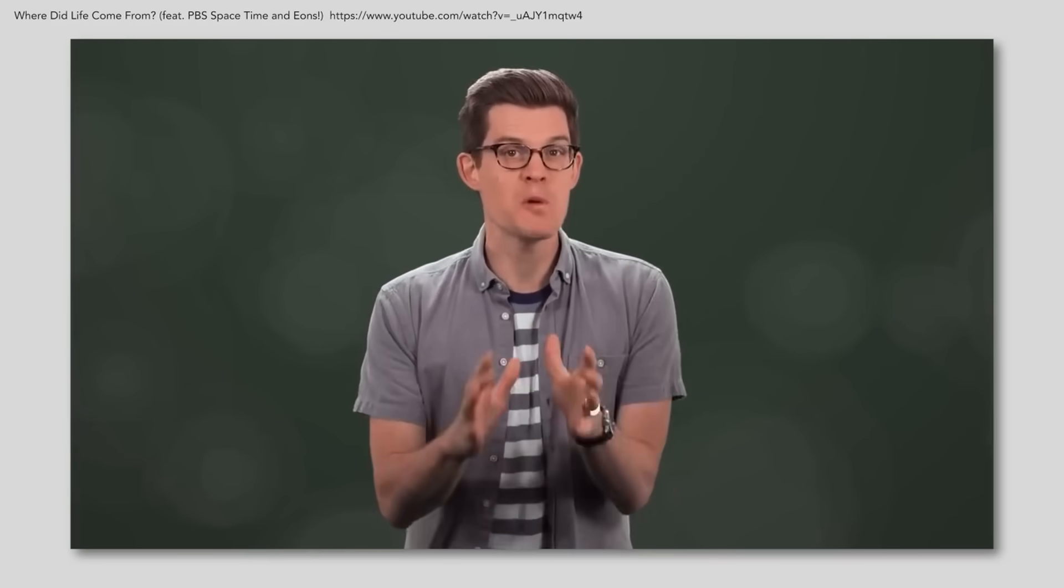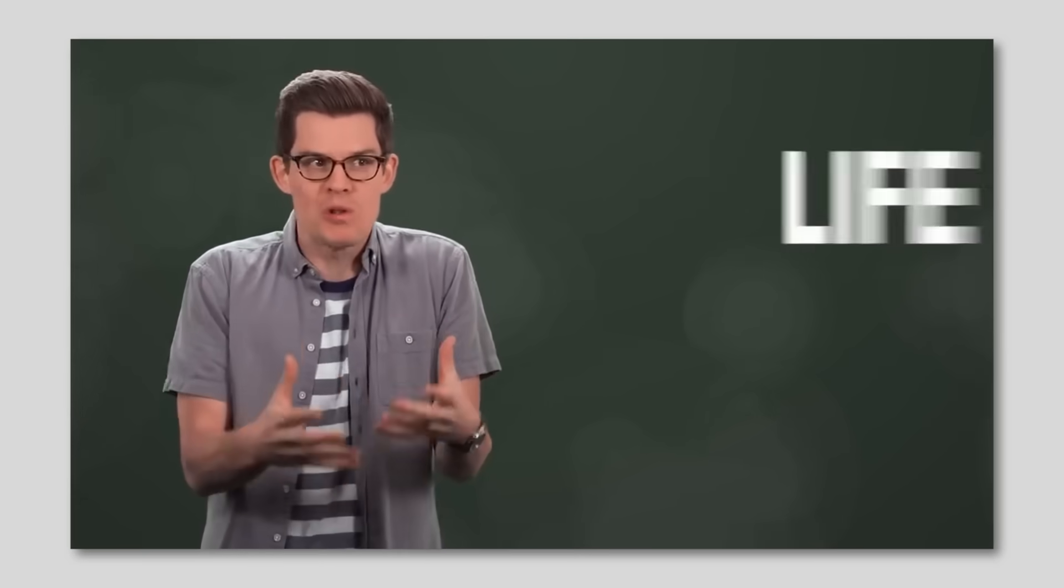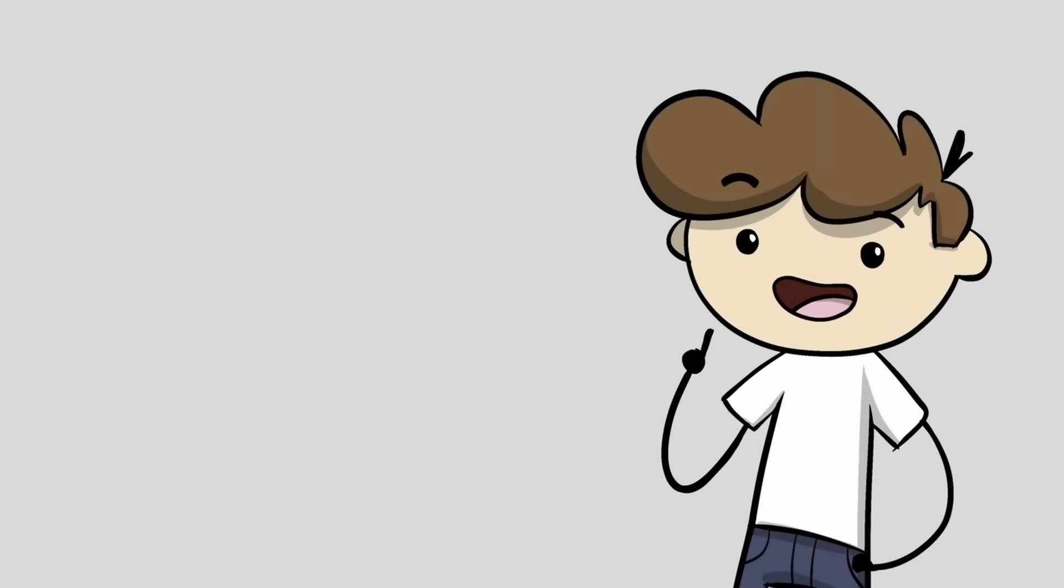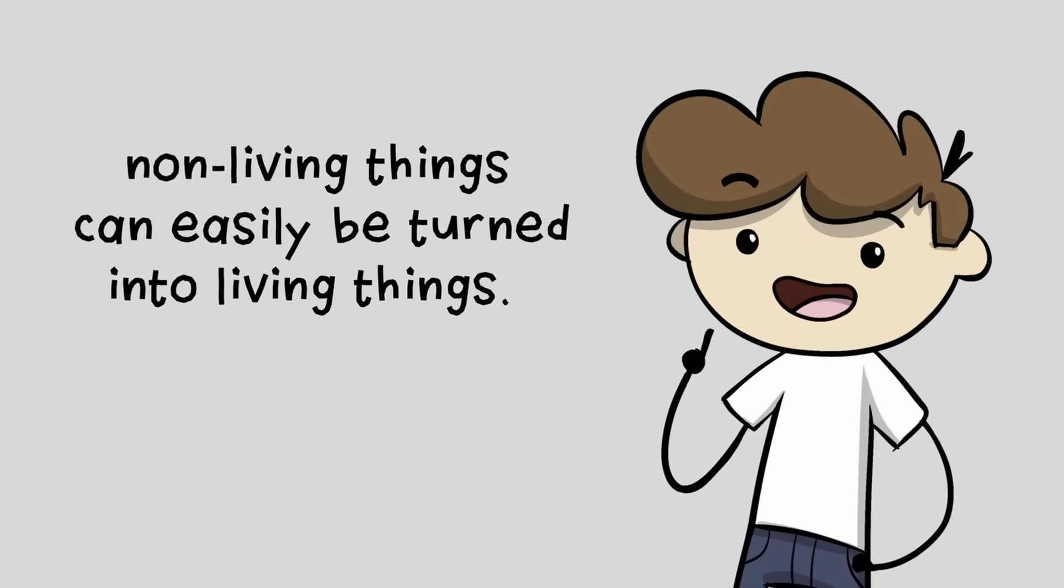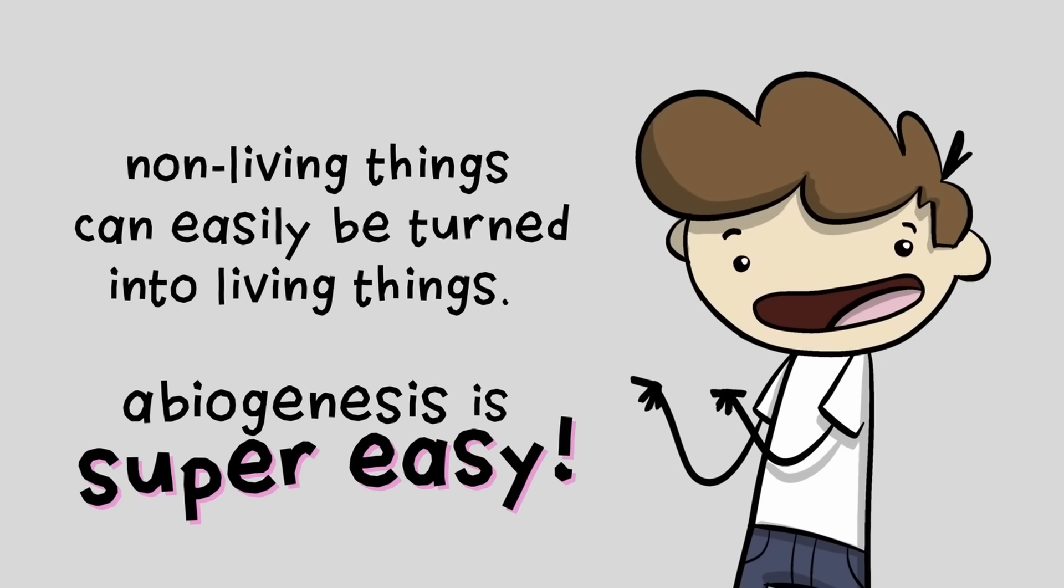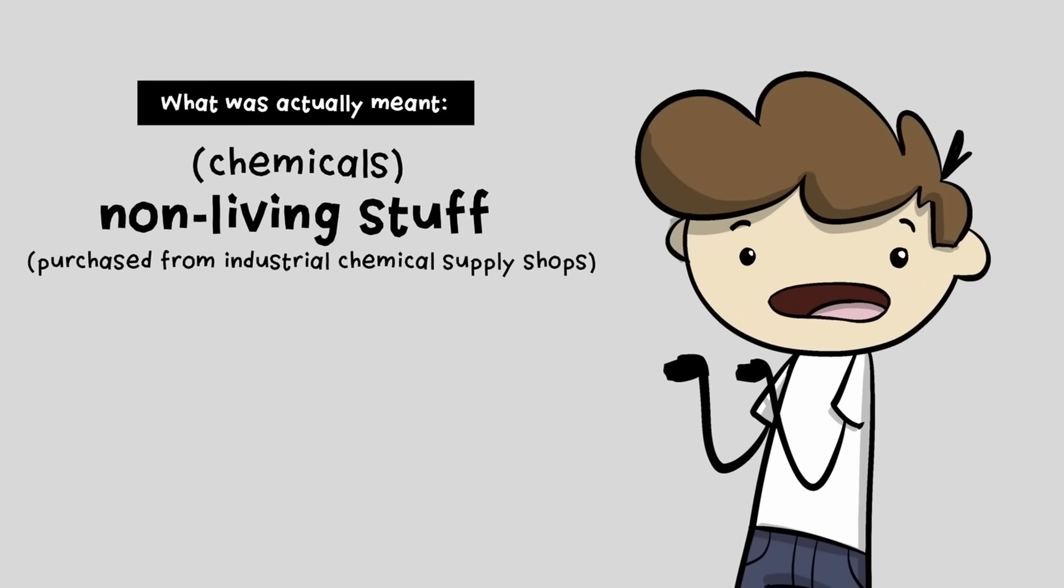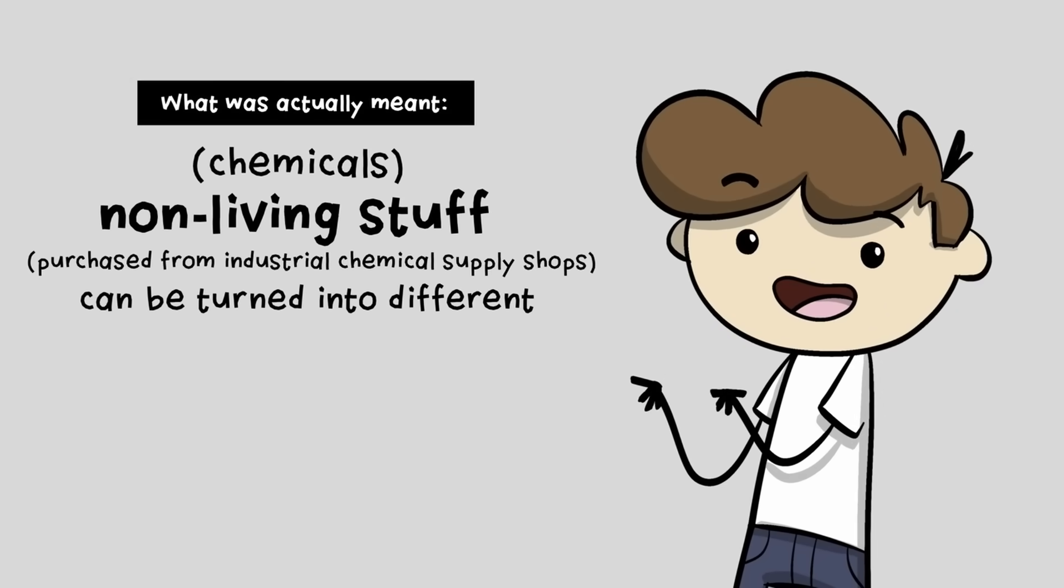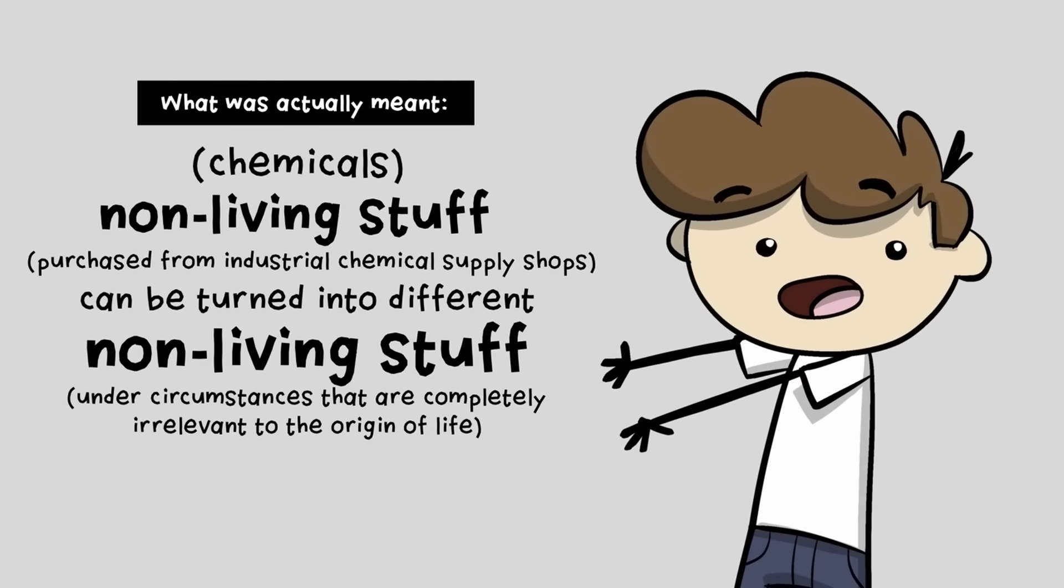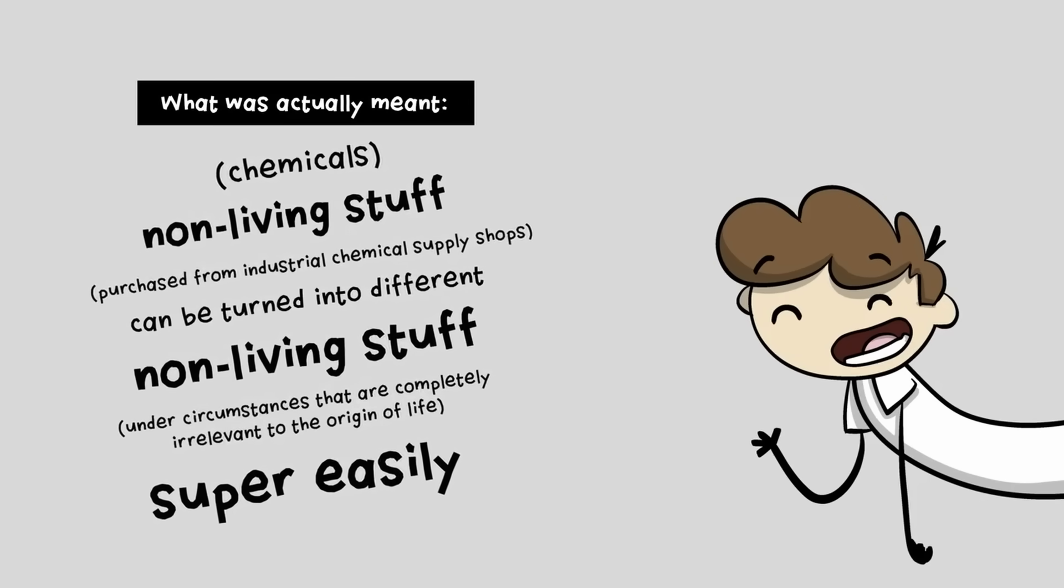What made Miller's experiment so special was it gave us proof. Regular non-life stuff could become cool life stuff super easily. Super easily. If you understood him to mean that non-living things can easily be turned into living things, and that abiogenesis is super easy, you could be forgiven for misunderstanding this misleading half-truth. What was actually meant is that chemicals, non-living stuff, purchased from industrial chemical supply shops can be turned into different non-living stuff under circumstances that are completely irrelevant to the origin of life super easily. But put that way, the argument seems much less convincing.